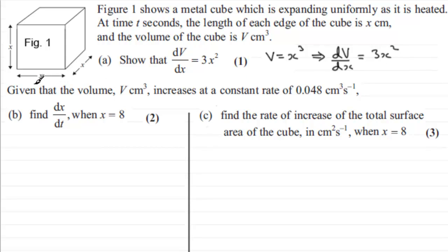In the next part it says given that the volume V centimeter cubes increases at a constant rate of 0.048 centimeter cubes per second, we've got to find dx by dt when x is 8. In other words, find the rate of change of the length x when x is 8. So to do this, if we just put down first of all dx by dt.